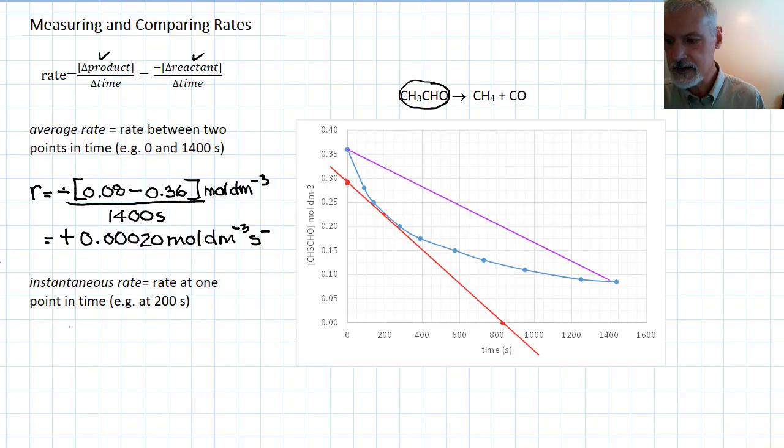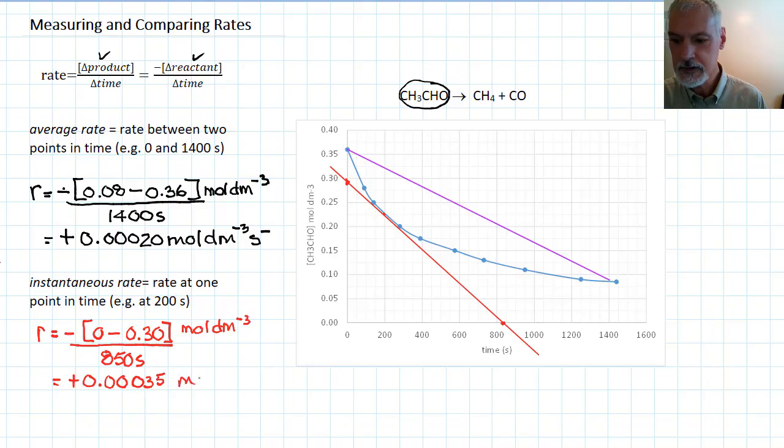So my instantaneous rate of reaction then, again the negative. My final concentration down here is zero. The initial concentration is about 0.3. And again, that's moles per decimeter cubed. And the run on the bottom, my time is about 850 seconds. Giving me an instantaneous rate of reaction. Again, that's positive 0.00035 moles per decimeter cubed per second.